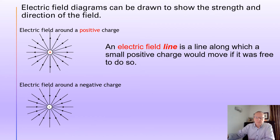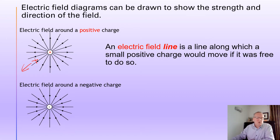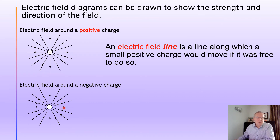The direction of the electric field line is defined as the direction a small positive charge would move if it were free to do so. So if I place a positive charge near that positive charge, it's going to be repelled and move away — that's why the arrows point away from the positive charge. The opposite is true with the negative charge: if I introduced a positive charge there, it's going to be attracted towards the negative charge.